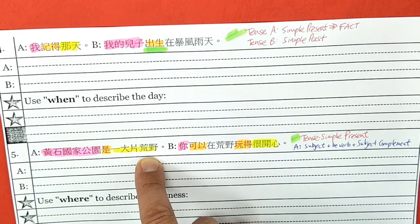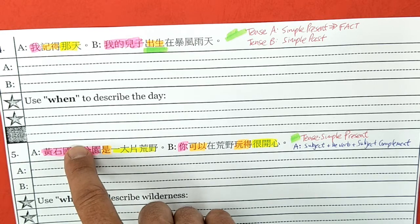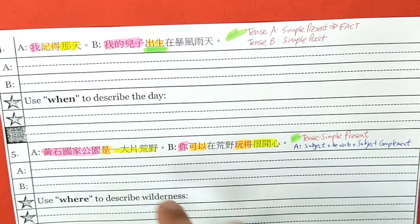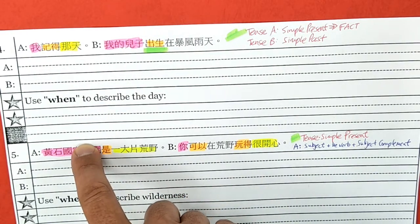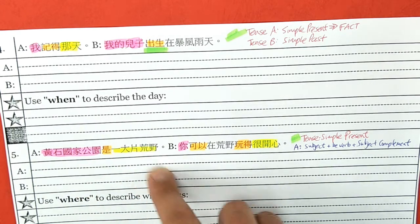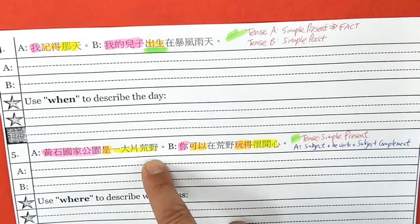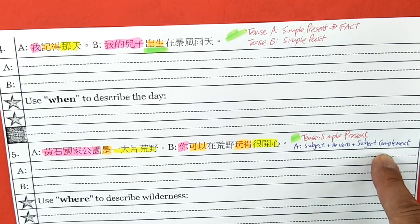What does a subject complement mean? Well, what I colored in yellow could go in front, and what I colored in pink could go in back — they can switch. If they can switch, this is called a subject complement. For example, 'Mr. Radisha is my teacher.' I could also say, 'My teacher is Mr. Radisha.' So sentence A is subject plus be verb plus subject complement. Make sure you write this down and write down the tense and any notes.